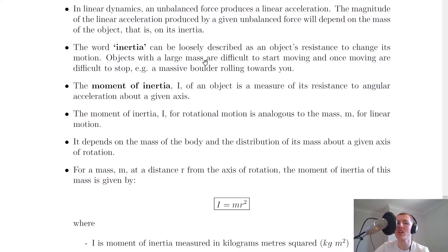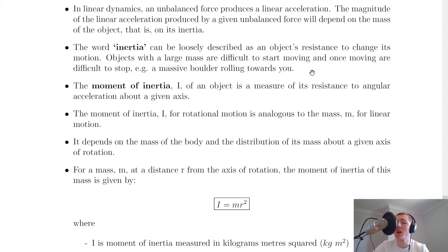Objects with a large mass are difficult to start moving, and once moving are difficult to stop. An example of this is a massive boulder rolling towards you. To get that massive boulder moving in the first place it's going to be quite difficult because it's got a large inertia. Now if it was coming towards you, you'd probably want to run or jump out of the way because it's going to be quite difficult to stop once it's already moving, as it will have picked up momentum.